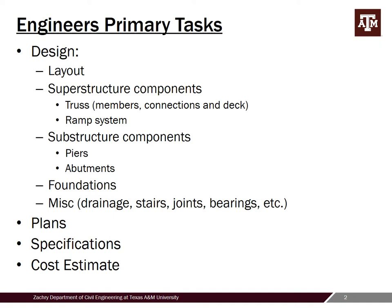The biggest chunk of work is the actual design. It starts out with an overall layout of the facility, nailing down the north-south, east-west orientation — in this case of the ramps and the truss bridge — and the relatively specific locations for the substructures. This information is critical because then you move on to the superstructure design, where you need to know your span lengths and other information.